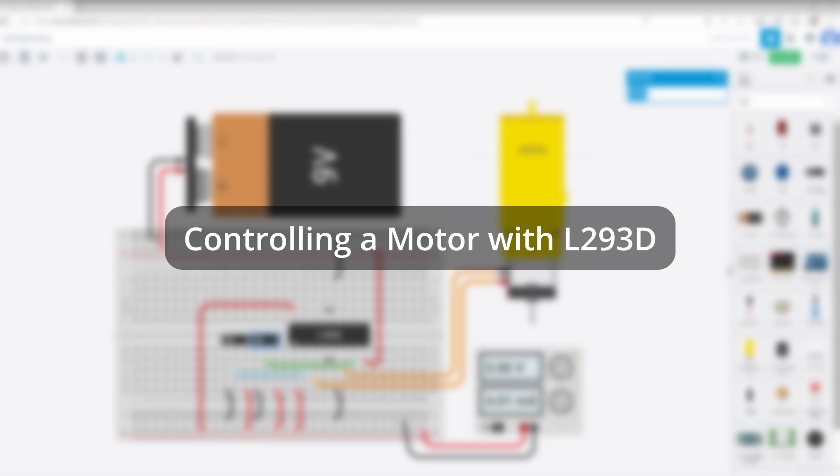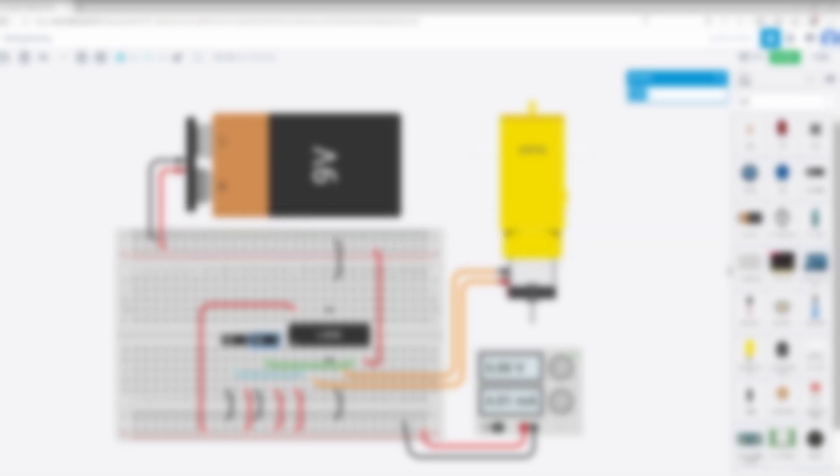Next, we will learn how to use the L293D motor driver to control a DC motor. We will run a simulation in Tinkercad, using switches to generate high and low signals to achieve forward and reverse motor control. First, we will use one side of the L293D to control a single motor.